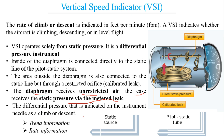The differential pressure indicated on the instrument needle shows a climb or descent, and once a change is detected a mechanical linkage converts it into a reading. The VSI provides two kinds of information: trend information — whether the aircraft is climbing, descending, or in level flight — and rate information — the rate at which we are climbing or descending.